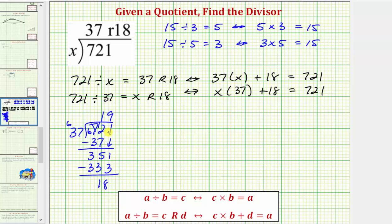So 721 divided by 37 is equal to 19 with the remainder of 18. So because 721 divided by 37 is equal to 19 with the remainder of 18, notice how this tells us x equals 19.